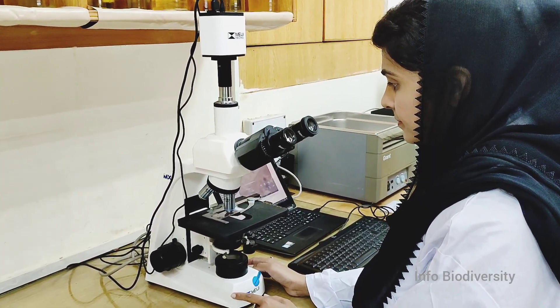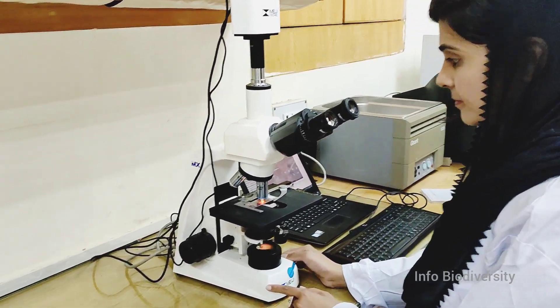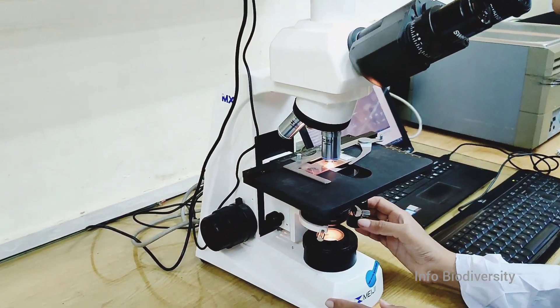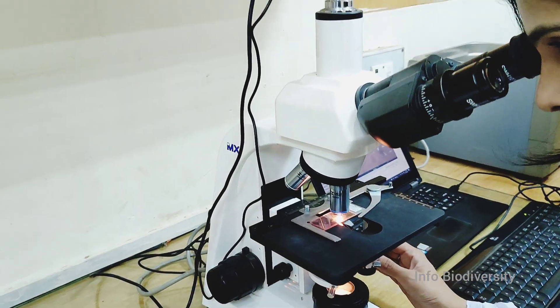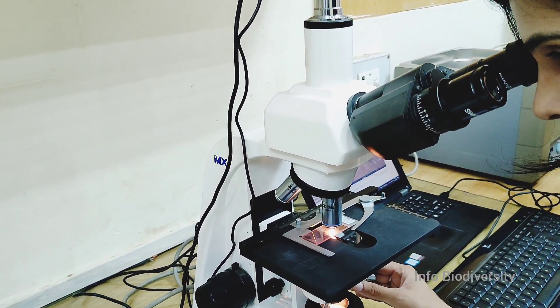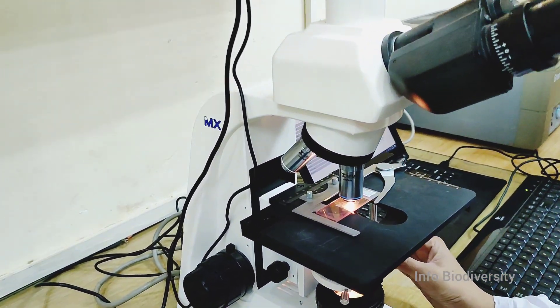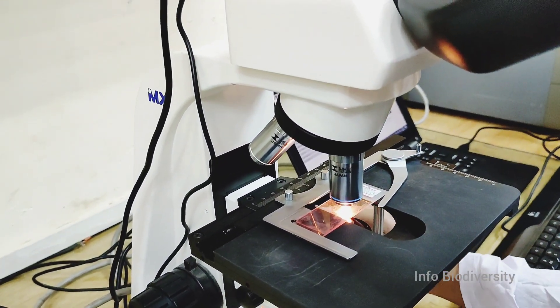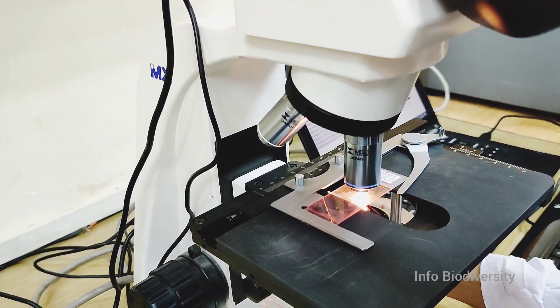The third step is to study the prepared slide under light microscope. Here you see, this is the Meiji light microscope, which contains the lenses of 10x, 40x and 100x. You put the slide on the stage to study the different parameters of the pollen.